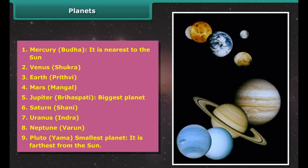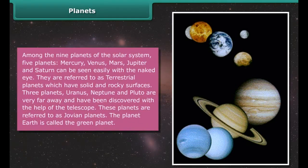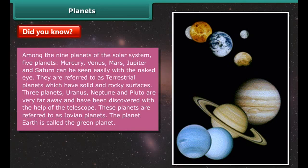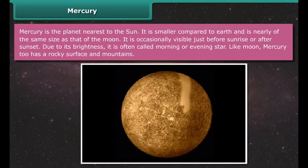Planets are solid heavenly bodies which revolve around the Sun in closed elliptical paths. A planet is made of rock and metal and produces no light of its own — it shines because it reflects the light of the Sun. Since the planets are much nearer than the stars, they appear to be big and do not twinkle at night. The planets move around the Sun from west to east, so their relative positions keep changing day by day. There are nine major planets including the Earth; the planet nearest to the Sun is Mercury and the farthest is Pluto.